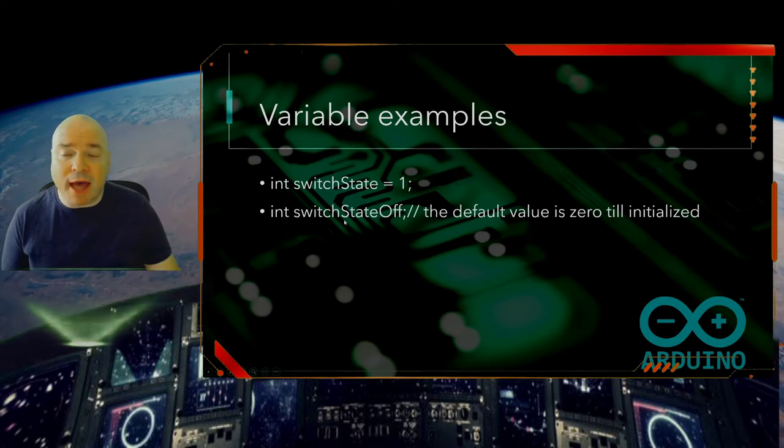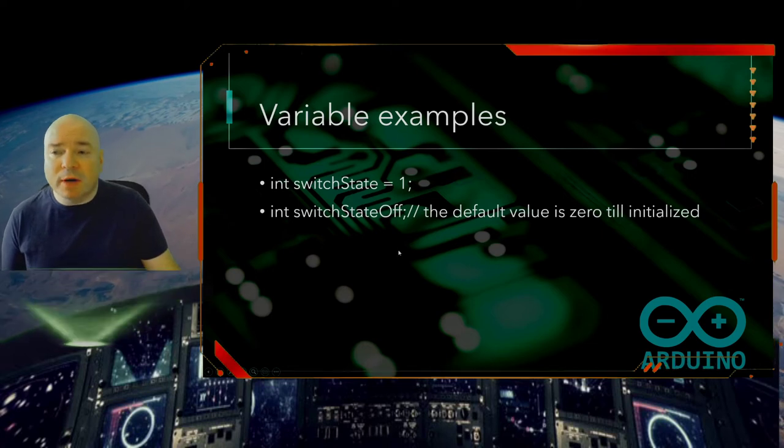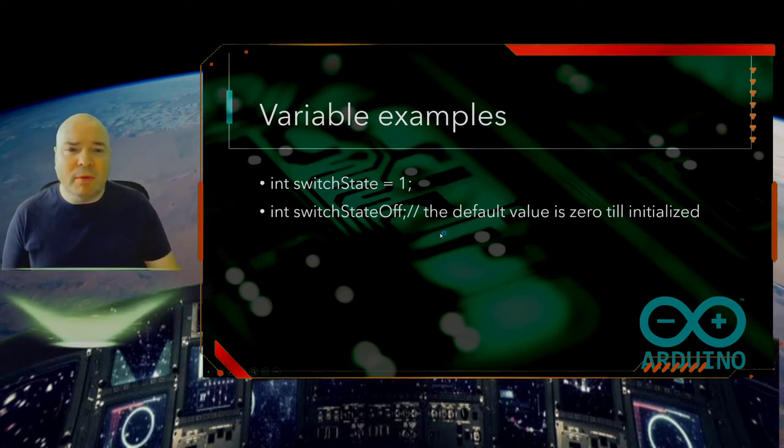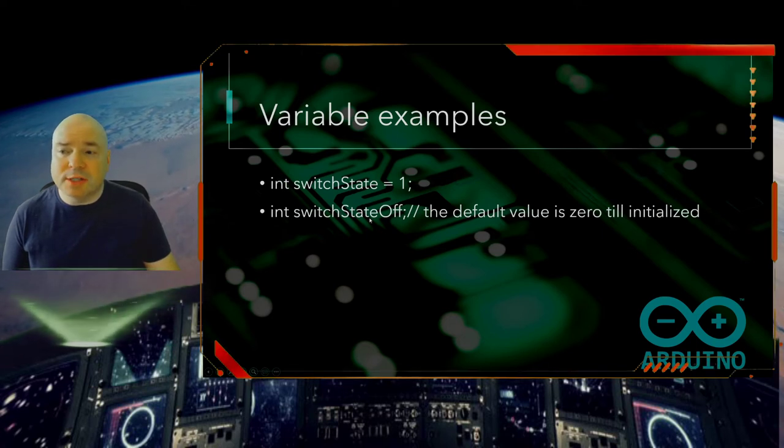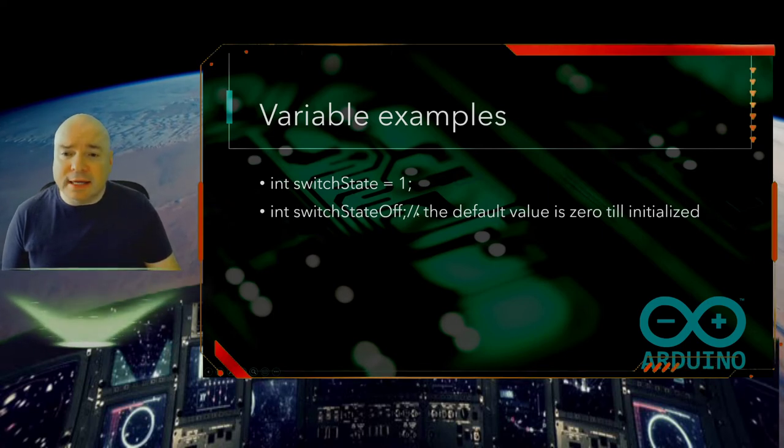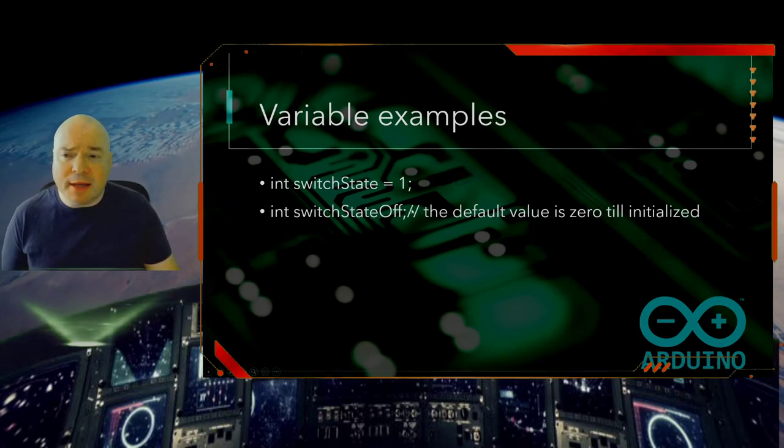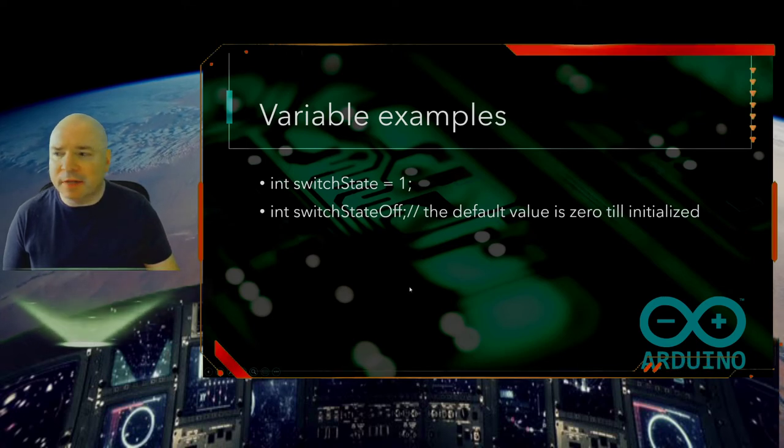Now, we also don't have to initialize the variable immediately. We could just declare it. Sometimes we want to declare the variable, but not set it up with a value yet because maybe the value is coming from somewhere else. And we don't want to put a value in there. So we declare it by saying it's an int. Again, that's the size of the box. Then I have my camel case again, switch state off. Now, the default value, and my semicolon, the default value is zero. You'll notice that I also have my comments here again, which should be backslashes, not forward slashes. That's a mistake. Those comments happen to be at the end of the line. That's another way of commenting. You can write comments right at the end of line of code.